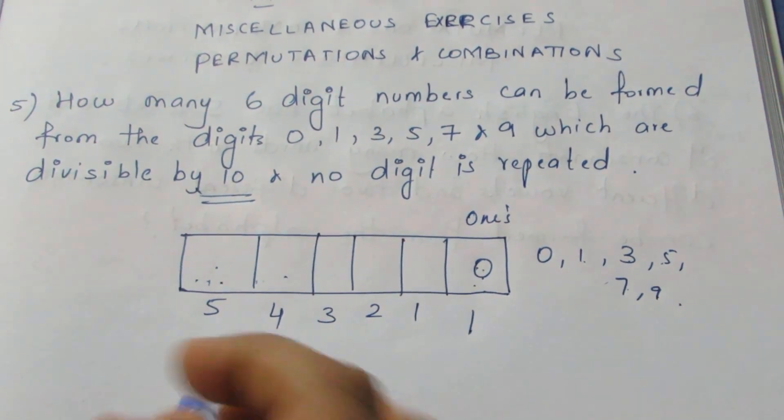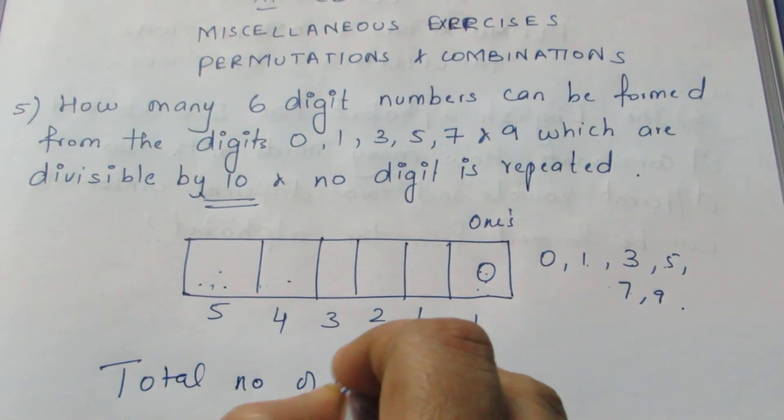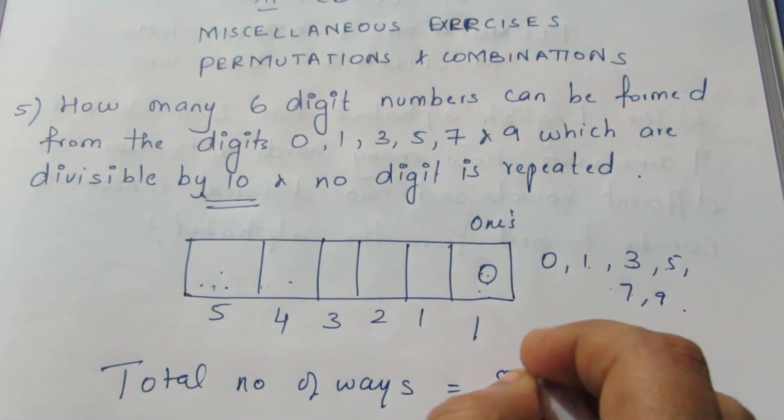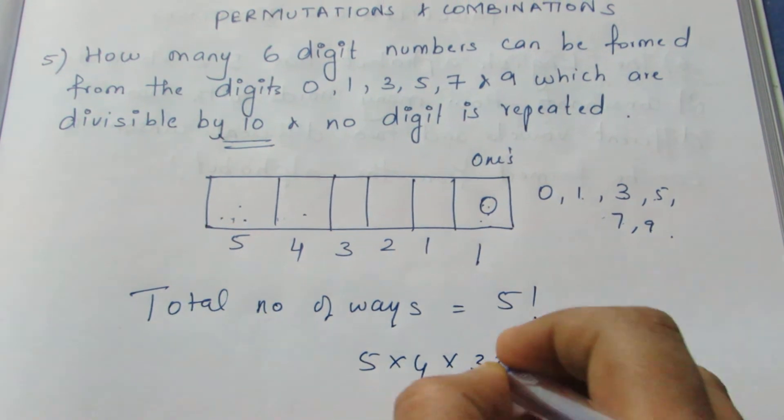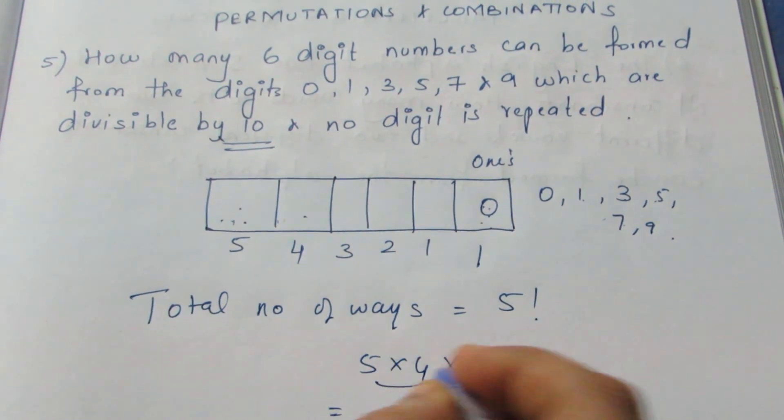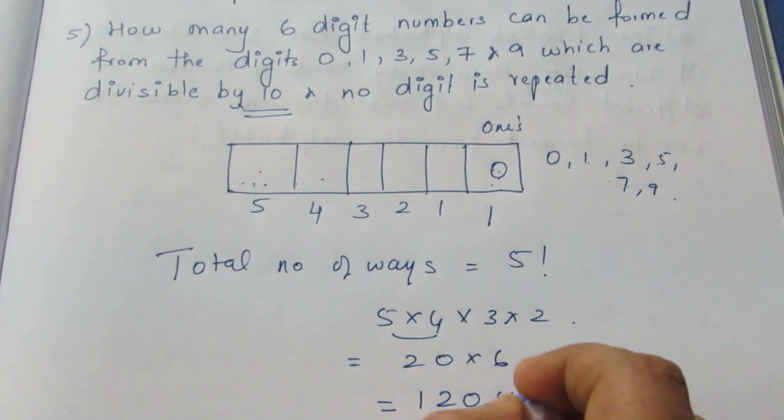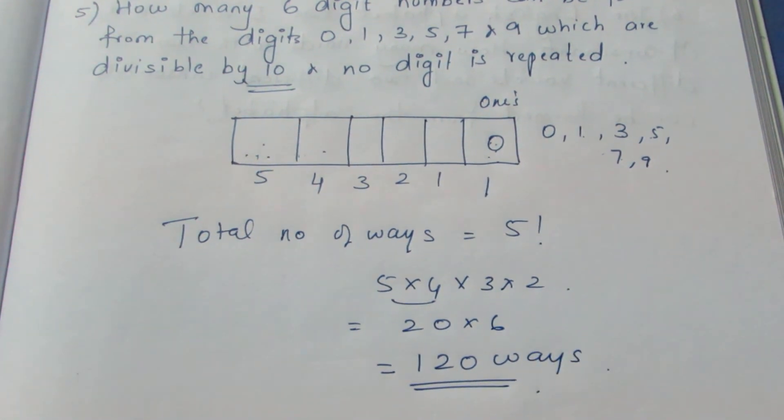Now the total number of ways will be 5 factorial. Because 5, 4, 3, 2, 1, we can write this to be 5 factorial. That is 5 into 4 into 3 into 2. 5 times 4 is 20, 3 times 2 is 6. So your final answer will be 120 ways.